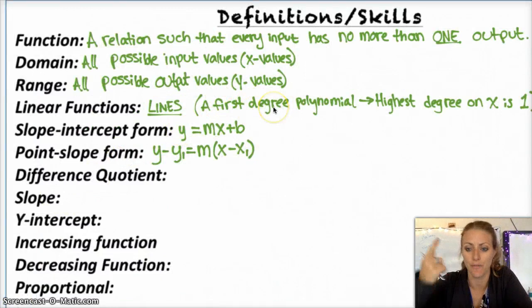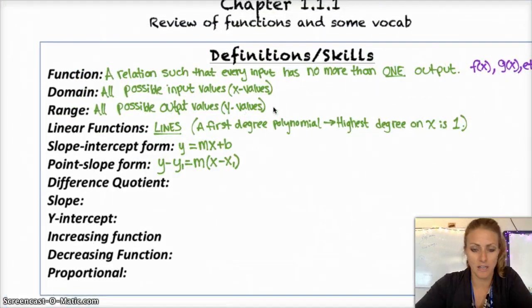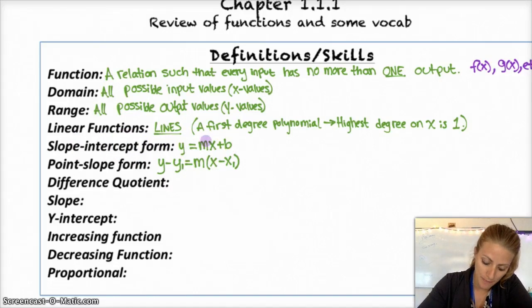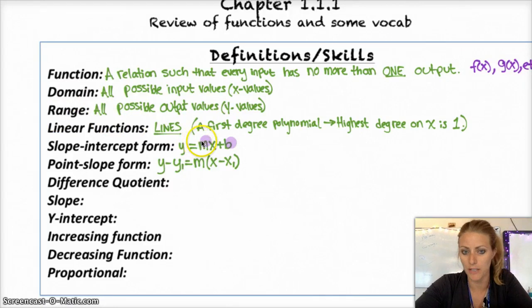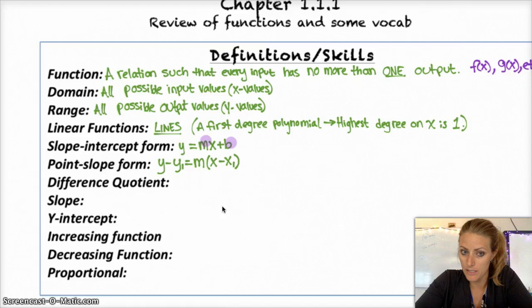A linear function is a first-degree polynomial, which means that the highest degree on x is 1. Your two different forms are y equals mx plus b, that's slope-intercept, and that's probably the most common. Both m and b are constants, m is your slope, rise over run, b is your y-intercept.